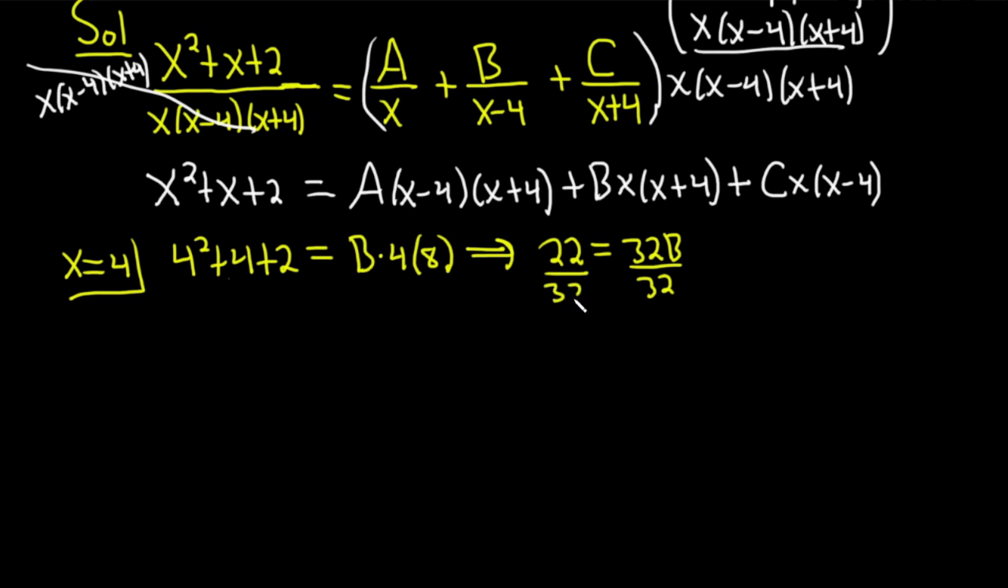This implies that the left-hand side is going to give us 16 plus 4, which is 20. So 22 equals 4 times 8 is 32B. Divide by 32. So B ends up being 22 over 32, so that's going to be 11 over 16. I'm going to put it in a box because that's an accomplishment. It takes a bit of work to find the constants A, B, and C. By the way, there's other ways to do this problem. This is just one way to do it.